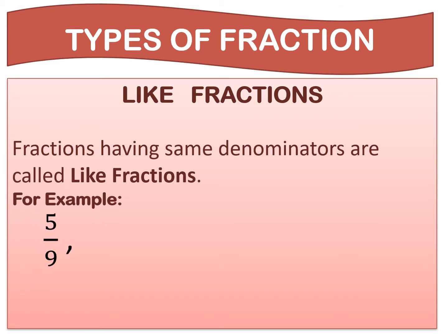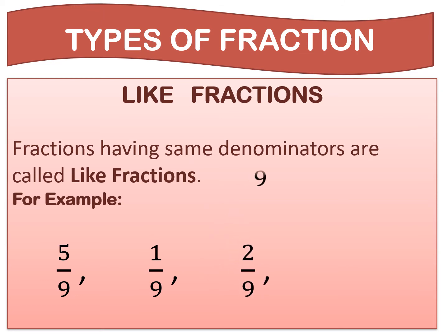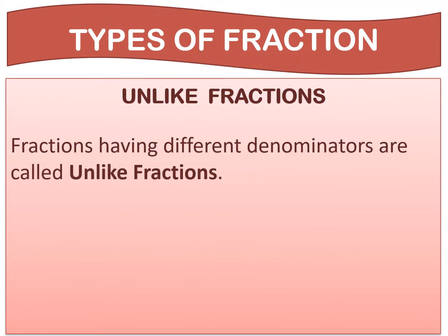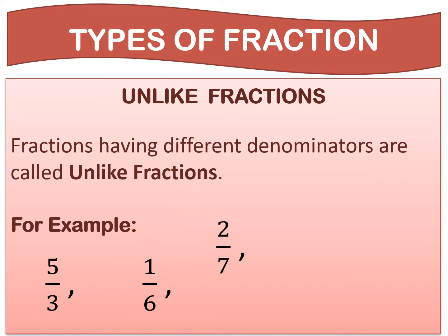Like fractions have the same denominator. For example, 5 upon 9, 1 upon 9, 2 upon 9, and 7 upon 9. In each case, the denominators are the same, equal to 9. Our next topic is unlike fractions. Fractions having different denominators are called unlike fractions. For example, 5 upon 3, 1 upon 6, 2 upon 7, and 7 upon 9. In these examples, all the denominators are not the same, so they are all unlike fractions.